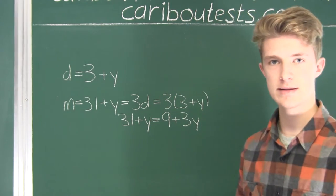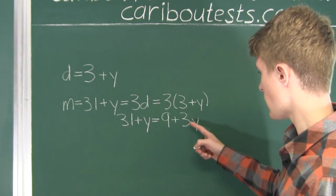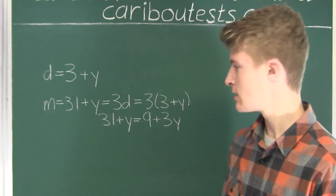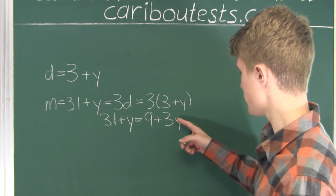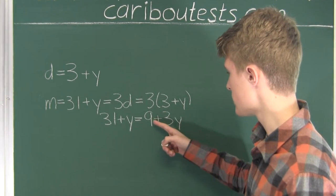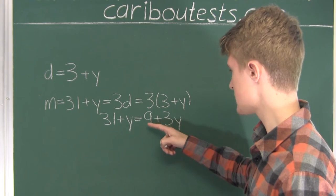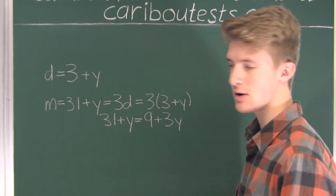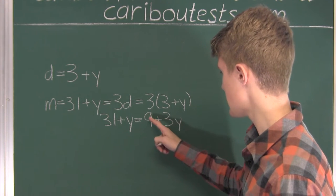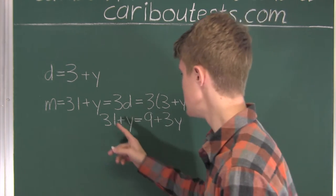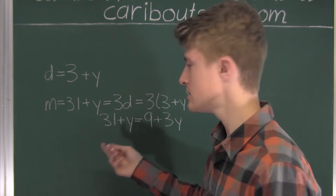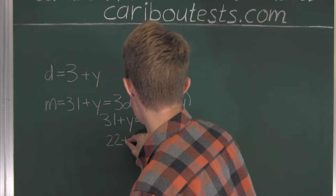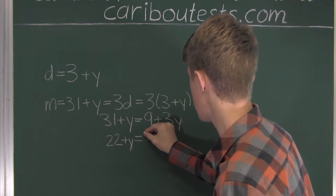Okay, so what we want to have is the variable Y on one side, and just the number on the other side. So we want to subtract 9, because we have plus 9. Whatever we do on one side, we have to do on the other side. So if we subtract 9 on this side, we also subtract 9 on this side. So 31 minus 9 is 22. So we have 22 plus Y, and then we just have 3Y.